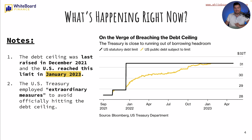The debt ceiling was last raised in December of 2021. The U.S. reached this limit in January of 2023. The black line is the U.S. statutory debt limit, and then yellow is the U.S. public debt subject to limit. These extraordinary measures are a set of temporary actions that the Treasury can take to create additional headroom under the debt limit and continue meeting the government's financial obligations without violating the ceiling. These actions might include suspending the issuance of new debt or the reinvestment of matured securities in specific government funds, such as the Civil Service Retirement and Disability Fund, the Postal Service Retiree Health Benefits Fund, the Government Securities Investment Fund, or the Federal Employees Retirement System.